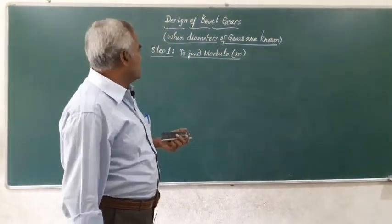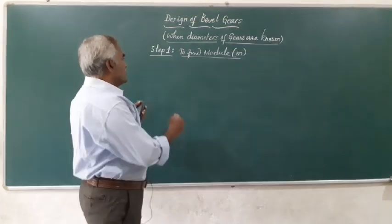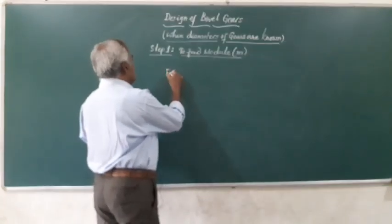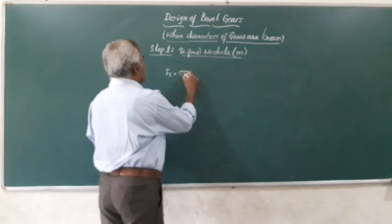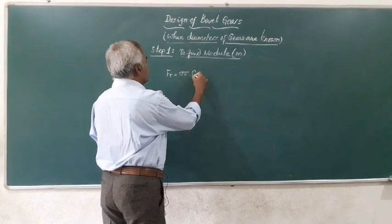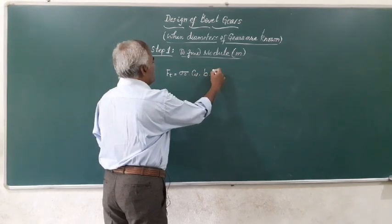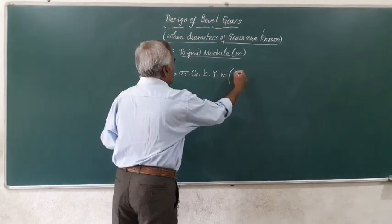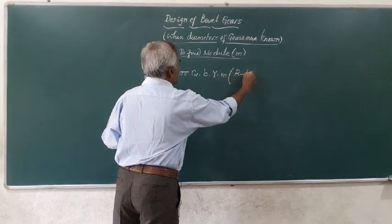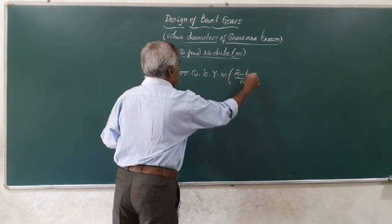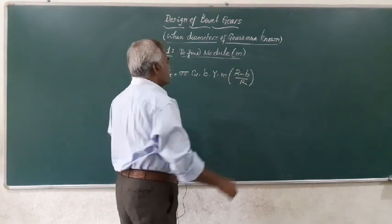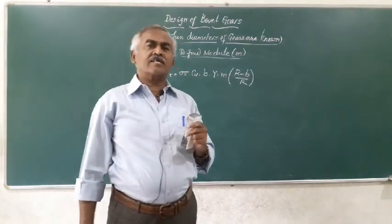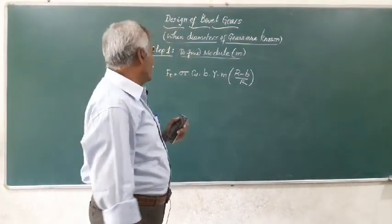For bevel gears, the modified Lewis equation is: Ft = σ₀ · Cv · B · Y · M · (R − B) / R. These equations are available in the machine design data handbook, so you need not memorize them.